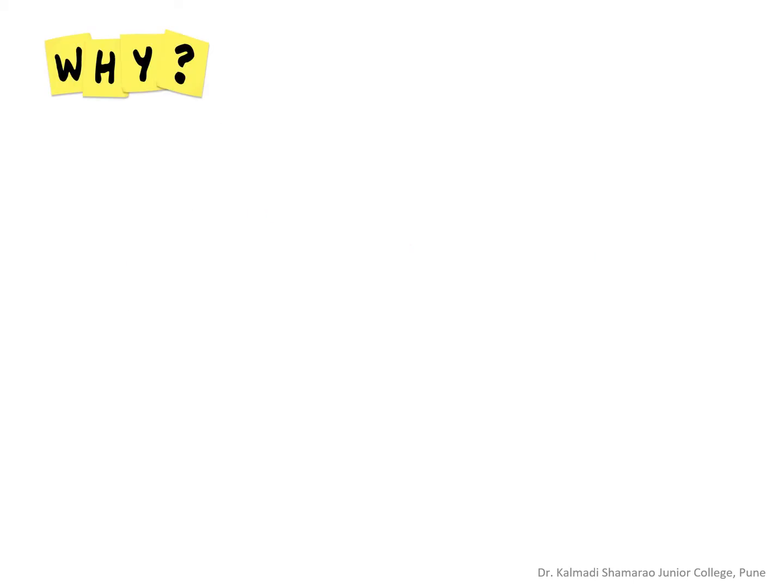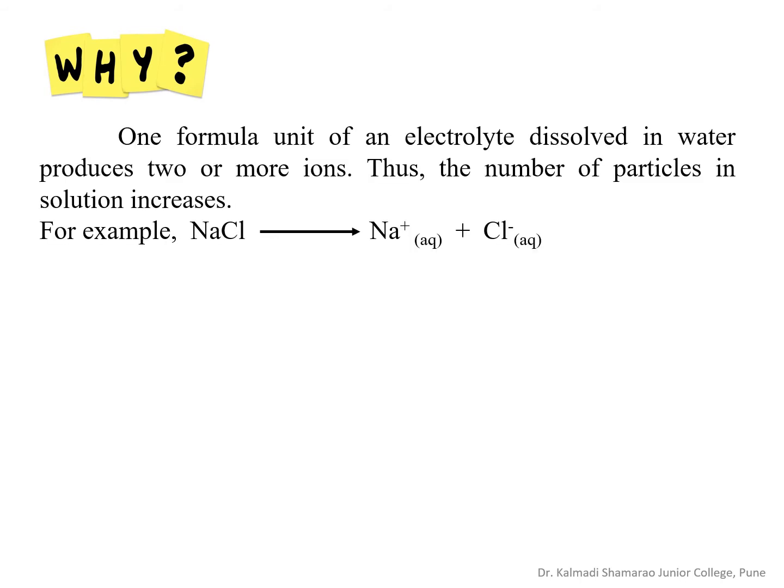Why are the colligative properties of electrolyte solutions greater than those for non-electrolyte solutions of the same concentration? One formula unit of an electrolyte dissolved in water produces two or more ions. Thus, the number of particles in solution increases.